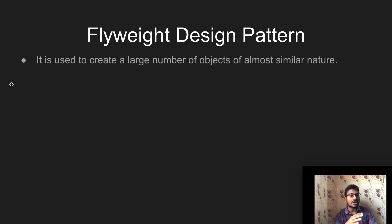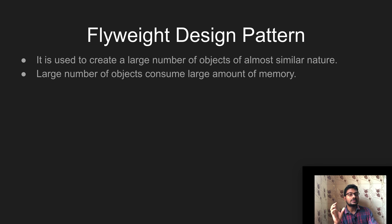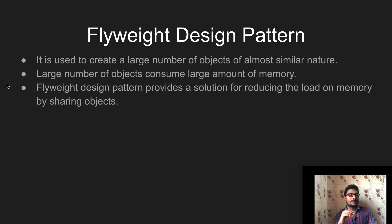It is used to create a large number of objects of almost similar nature. If objects are of a similar nature, we can create n number of objects without bombarding the memory — we can reuse the objects. A large number of objects consumes large amounts of memory. For example, if one object requires 1 MB and we require a thousand similar objects, then we need 1000 MB of memory.